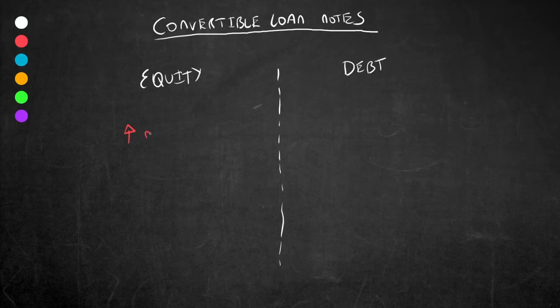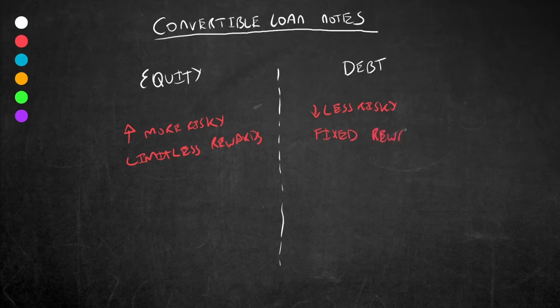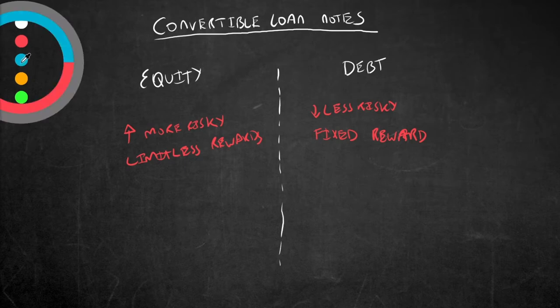Equity is generally more risky, however, has the potential for limitless rewards if the company does really well. Debt is generally less risky, but has a fixed reward in that you know what the company is supposed to pay you back over a given period of time.